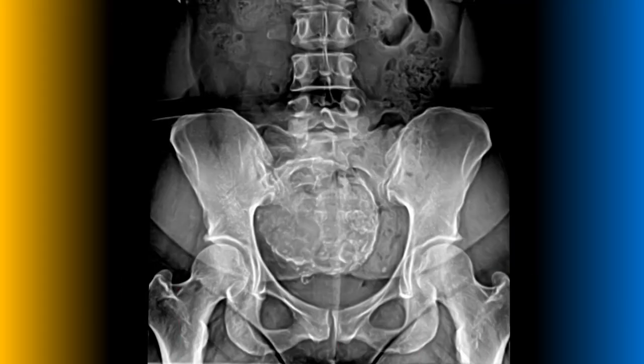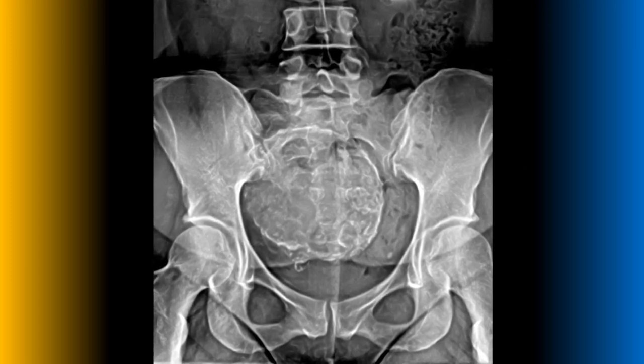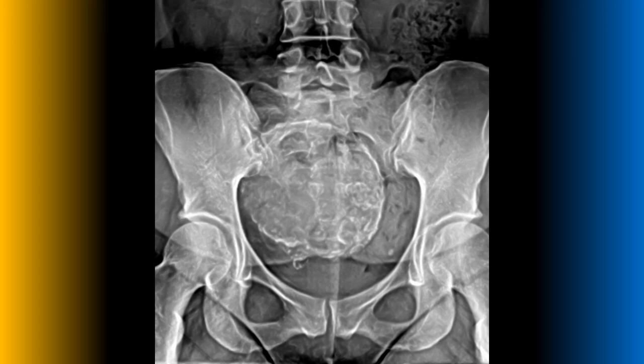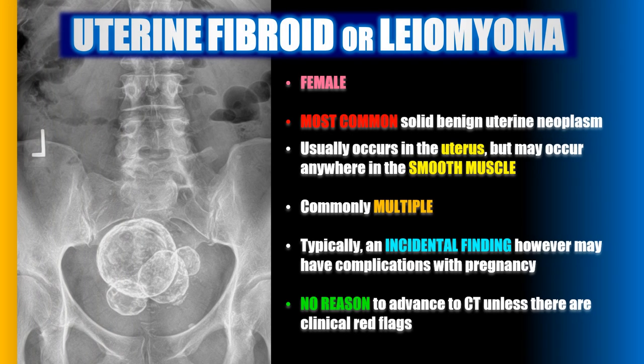Here is an example of one of the most common mass-like soft tissue calcifications seen in the pelvic basin. As long as it's not arising from the adjacent sacrum, odds are this large heterogeneous calcification represents a benign uterine fibroid or leiomyoma. I have a full video on this topic with numerous examples.